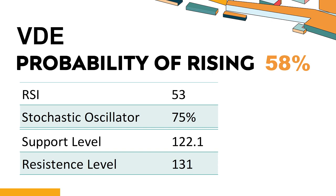The current stochastic oscillator of VDE is 75%. When the stochastic oscillator stays between 50 and 80, it may indicate that the stock is experiencing a mild downtrend with some selling pressure. In this case, an oversold signal could indicate that the stock is reaching a potential buying opportunity.